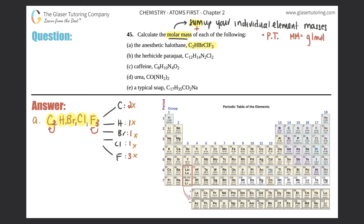Now we multiply each count by the molar mass from the periodic table. Carbon is 12.01, so 2 × 12.01 = 24.02. Hydrogen is 1.008, so 1 × 1.008 = 1.008. Bromine is 79.90, so 1 × 79.90 = 79.90. Chlorine is 35.45, so 1 × 35.45 = 35.45. Fluorine is 19.00, so 3 × 19.00 = 57.00.